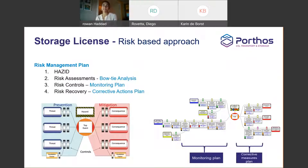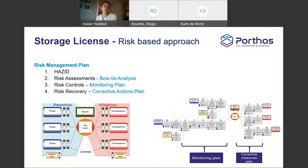A little bit on the storage license and how we have approached it — this will be setting a standard for many more permit applications to come as more North Sea fields become depleted and turn into CCUS candidates. The main thing we followed is a risk-based approach using bow-tie analysis: identifying the top event such as fault slippage, what the threats are and how we prevent them, and on the other side what our mitigations are before final consequences — things like your monitoring plan and corrective measures. This has all been submitted per reservoir and per hazard.